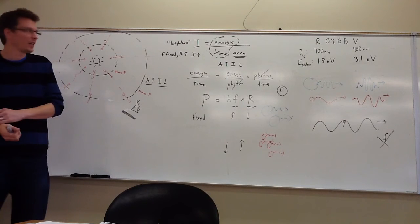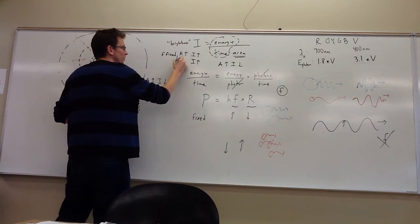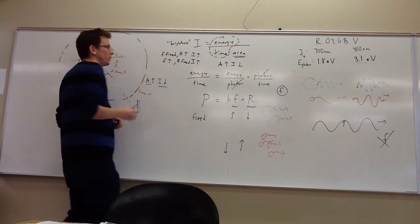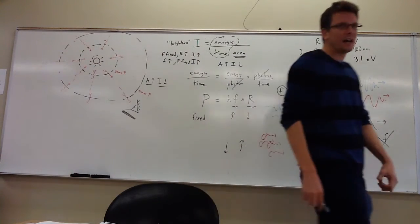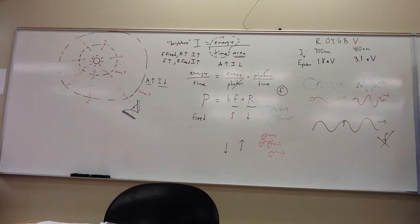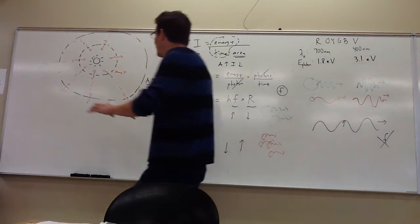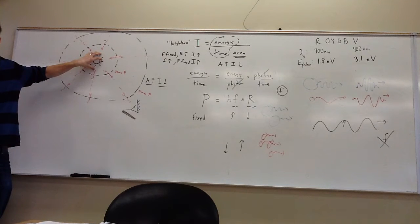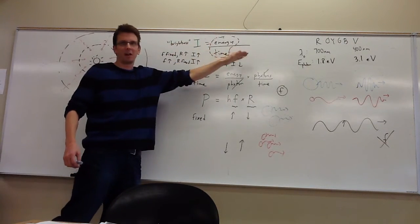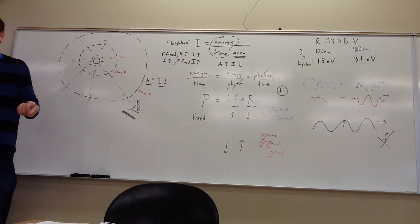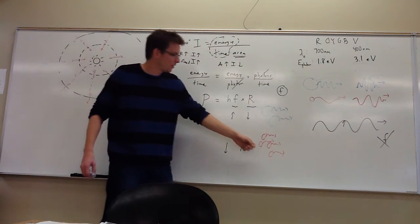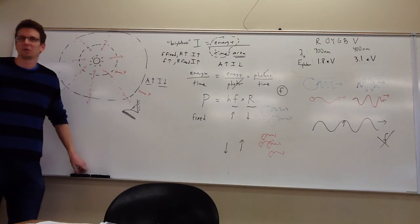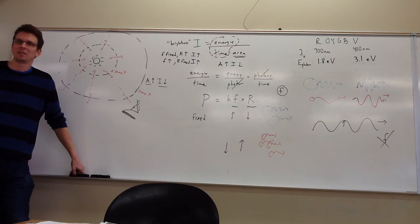There is also another way to increase the intensity: leave the rate of delivery fixed but increase the frequency. You can take exactly the same number of photons but change those photons from ones that have less energy to ones that have more energy. We wouldn't normally call that a brightness change — we'd call that a color change. But technically speaking, if you take off your red filter and put on a violet filter, that is also an increase in intensity — more energy delivered per time per area — because you're switching from the less energetic red photons to the more energetic violet photons.